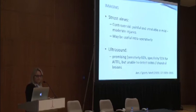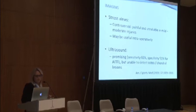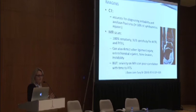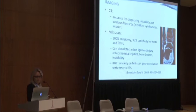Ultrasound is promising — sensitivity is 66% and specificity is a little bit better — but it can't detect the associated injuries that come with syndesmosis injury, so it's useful but not the ultimate diagnostic tool. CT scan is accurate for diagnosing instability and avulsion fractures, and we have to remember that up to 50% of syndesmosis injury cases will have an associated fracture. The MRI scan is what most of us use nowadays, reported to have 100% sensitivity and 93% specificity, and it can detect all the associated injuries. However, we have to remember that using MRI findings alone to predict return-to-sport time is not reliable.